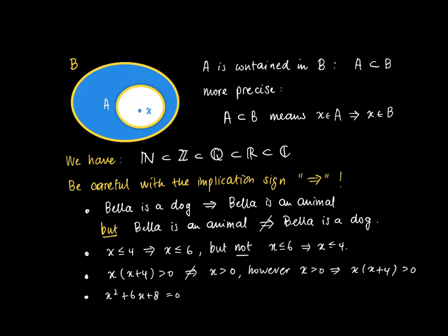Now consider the quadratic equation x squared plus 6x plus 8 equals 0. We know that this equation has two solutions: x equals minus 2 or x equals minus 4. But now we can go the converse, the other way around. If x equals minus 2 or x equals minus 4, this would imply that x squared plus 6x plus 8 equals 0. So now we can use the double implication sign, the two-sided implication sign.